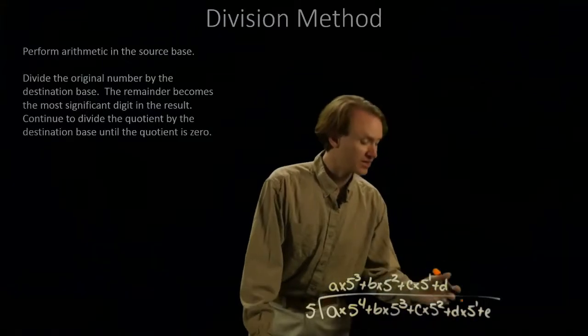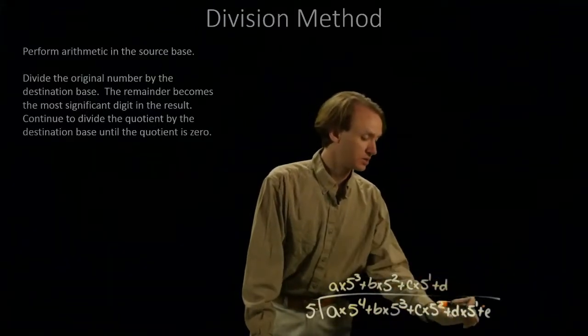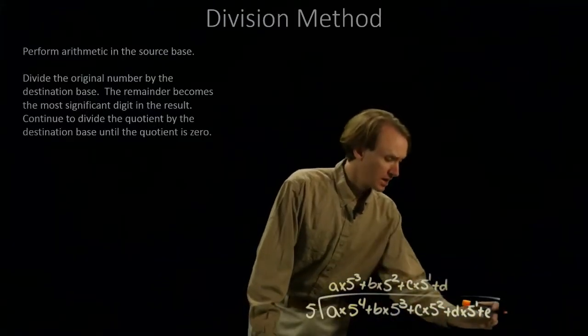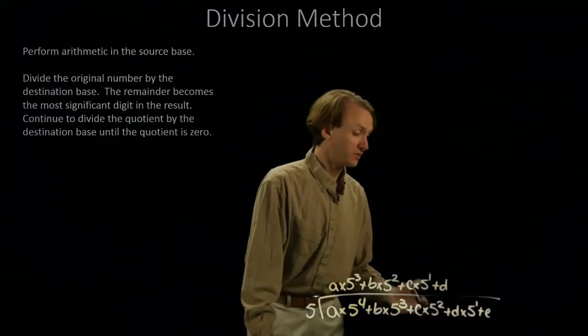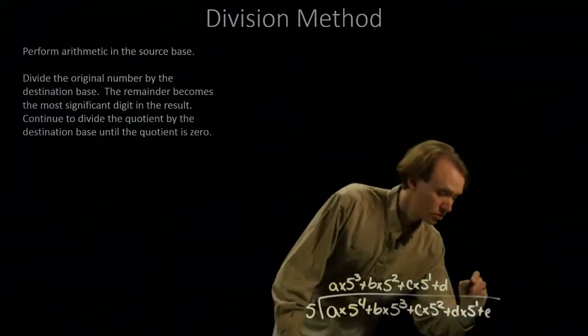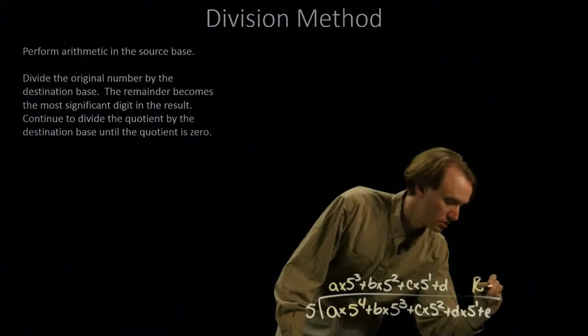Now, d is out of 5. We factored out all of the 5's from d times 5 to the 1st. And the e didn't have any factors of 5 in it at all, so I get a remainder of e.